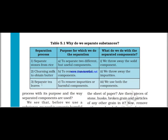The third part is why we separate tea leaves from the tea. We separate them to remove non-useful components. The tea leaves are not useful for us after the tea has been prepared, so to remove this non-useful component we separate the tea leaves from the tea. We then throw the solid component — the tea leaves — away. Students, you will prepare this table in your notebook.